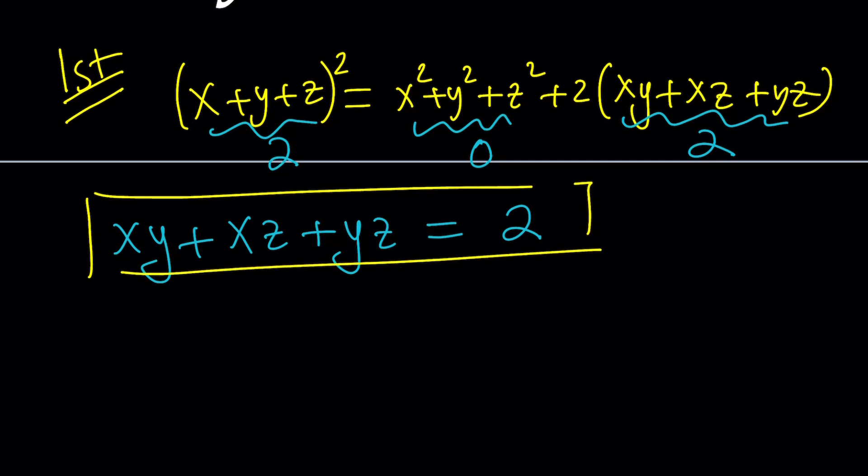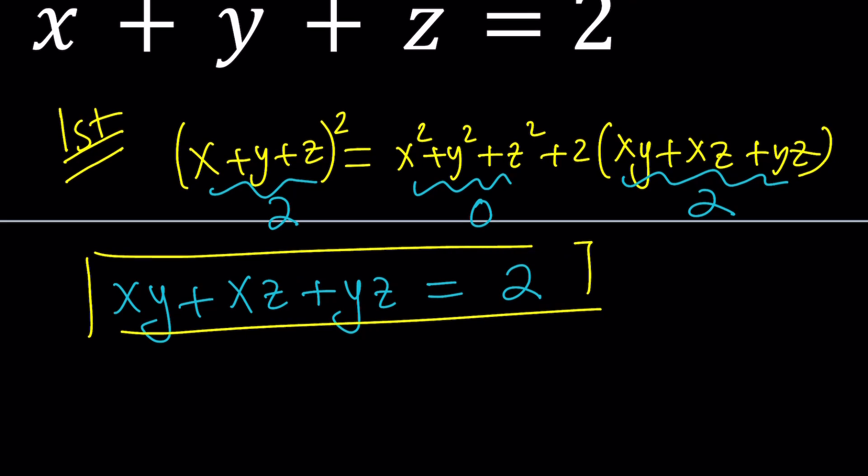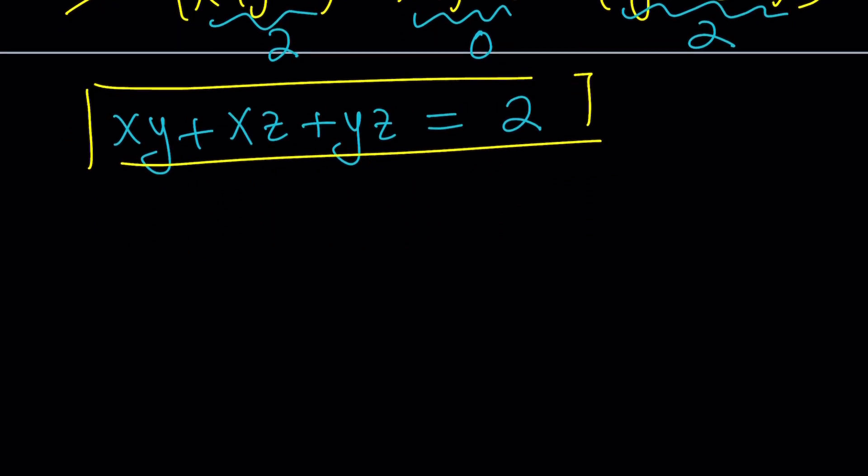So from here, we'll get another equation which is going to be very helpful. xy + xz + yz = 2. Let's go ahead and save this for now because we're going to use it in a little bit. Now, I'd like to get something else. And that something else is actually the product.